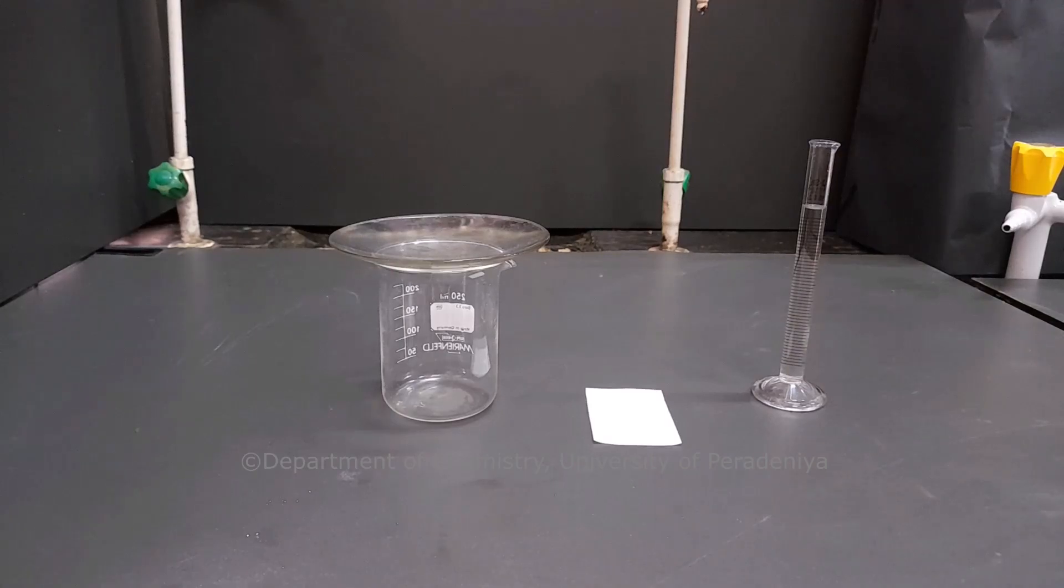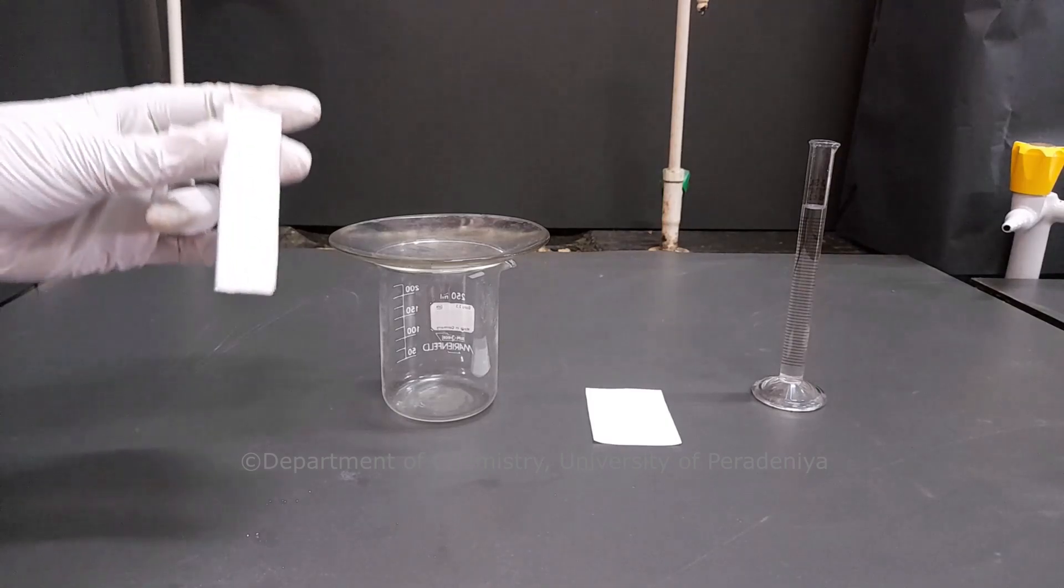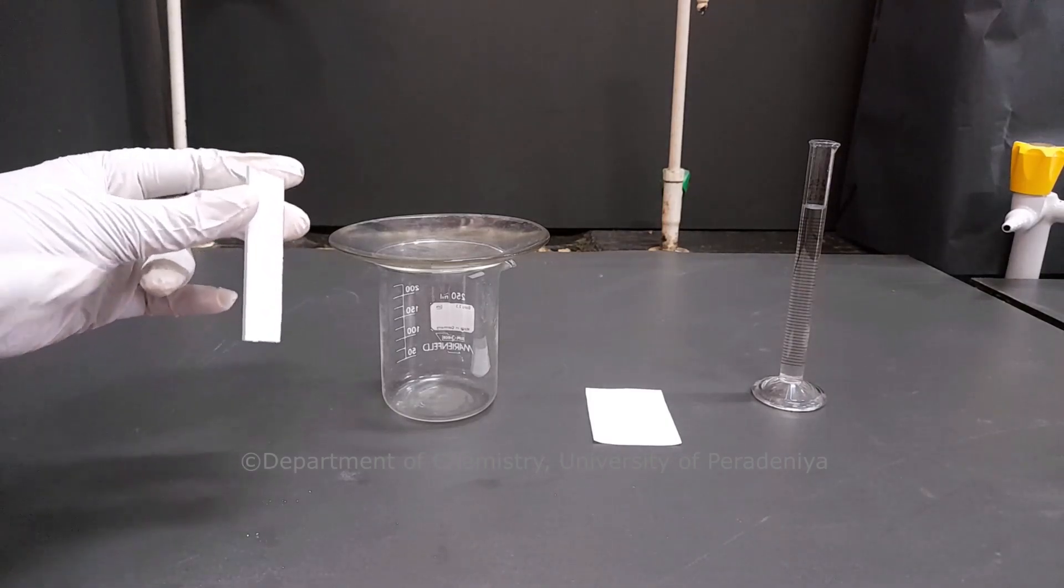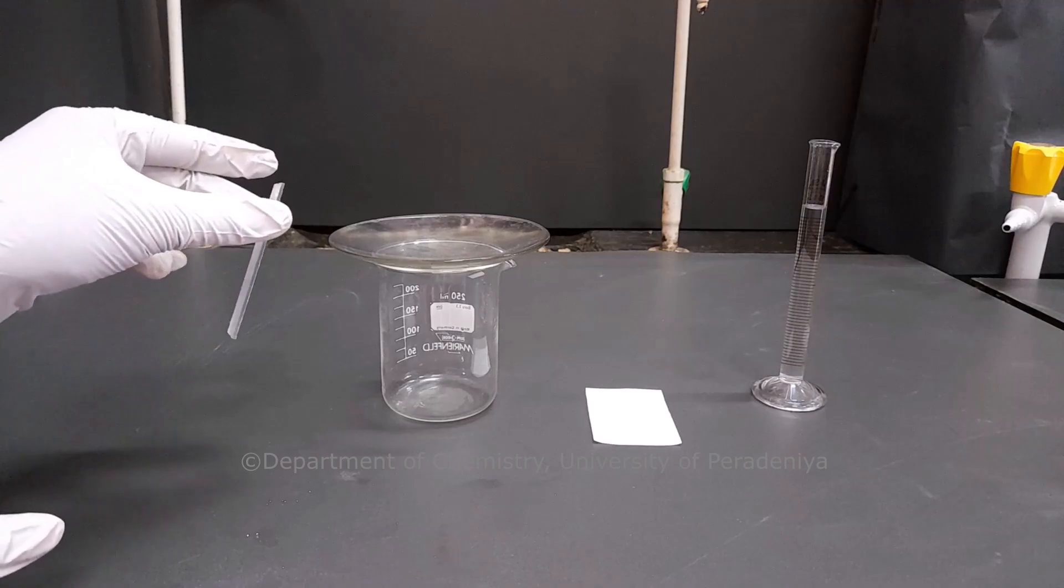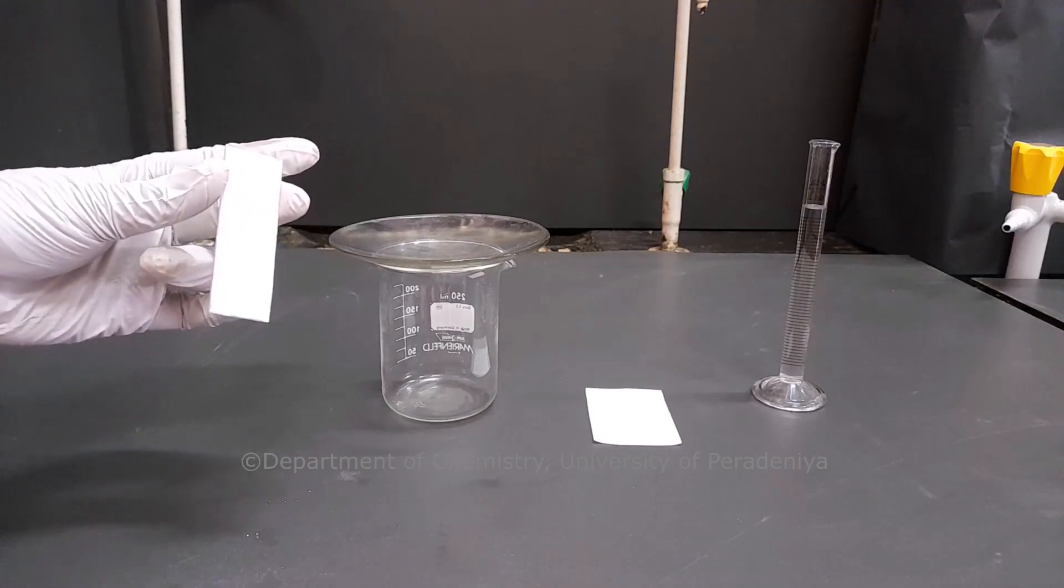There are many types of thin layer chromatography techniques. In this video, we are using a self-made glass plate with silica as the stationary phase. It should be handled only by its edge to avoid contamination.